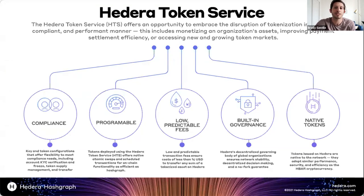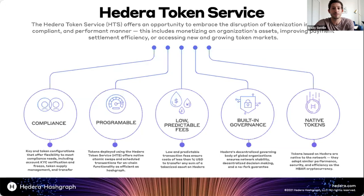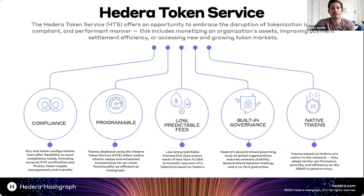The Hedera Token Service offers native tokenization for fungible and non-fungible tokens. It includes compliance functionalities like KYC flags for regulatory-compliant applications. There's built-in programmability — recently launched features include scheduled transactions, atomic swaps, and royalty fees. Fees are low and predictable, set at a consistent price in U.S. dollars but paid in HBAR. To transfer a token on Hedera costs only $0.001 USD paid in HBAR, and transaction fees are always stable. There's built-in governance from the Governing Council, preventing network forks. All tokens benefit from the native efficiencies, security, and performance of the underlying Hashgraph consensus.